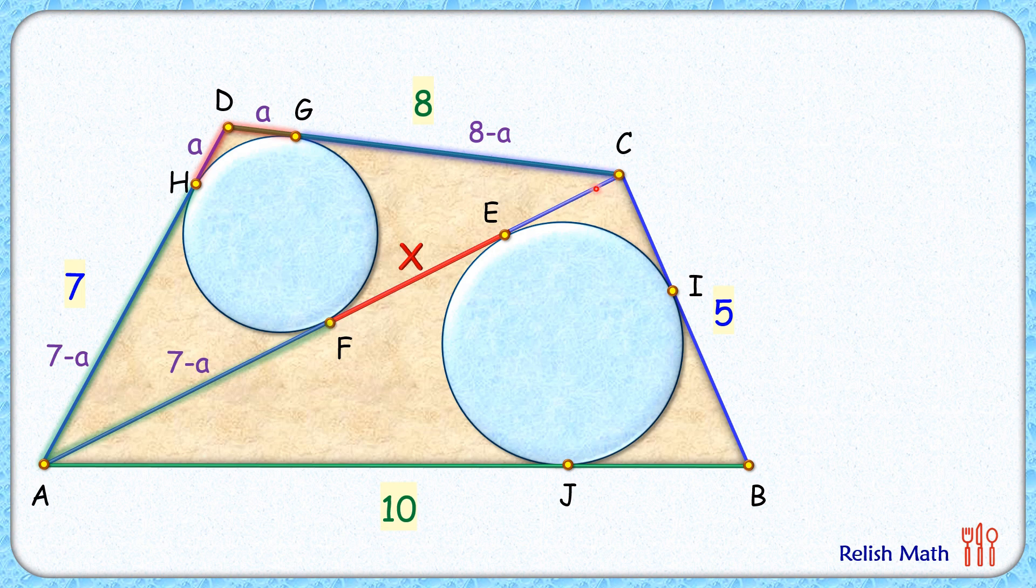How about CE? CE length will be 8 minus a minus x centimeters. From external point C, CE and CI are two tangents, and thus the length CI will be the same, 8 minus a minus x centimeters.